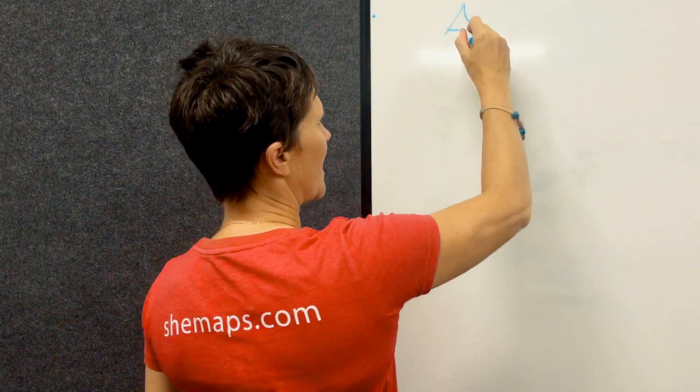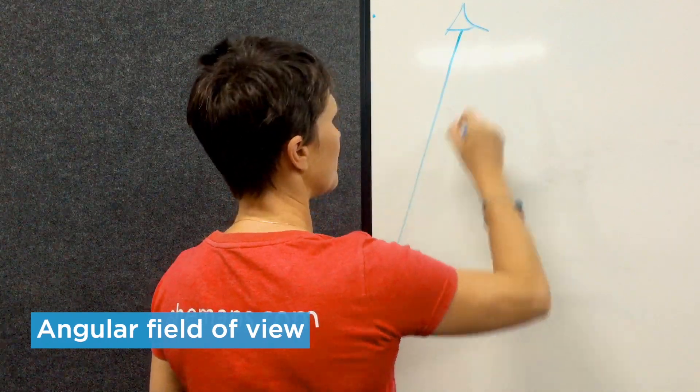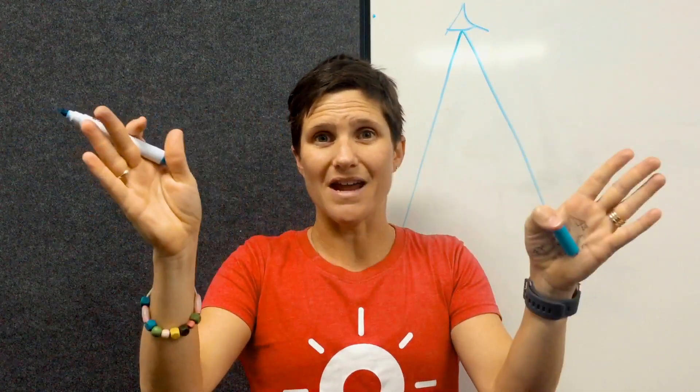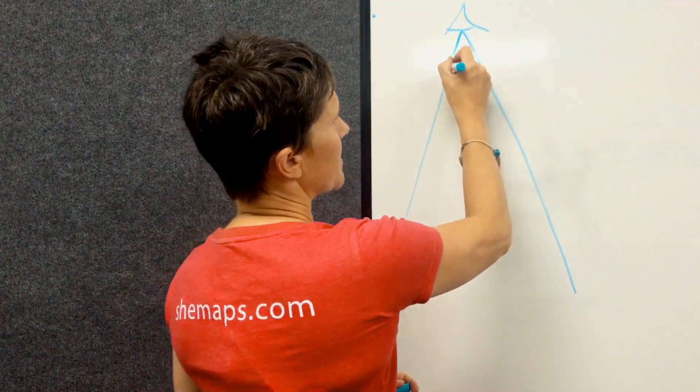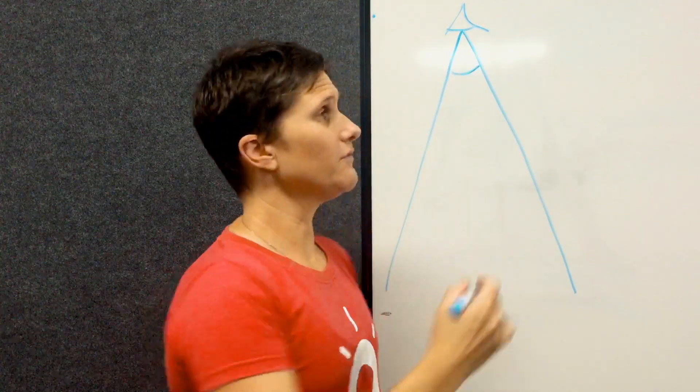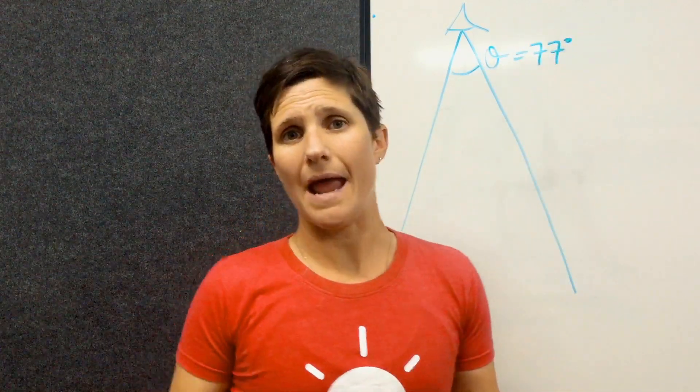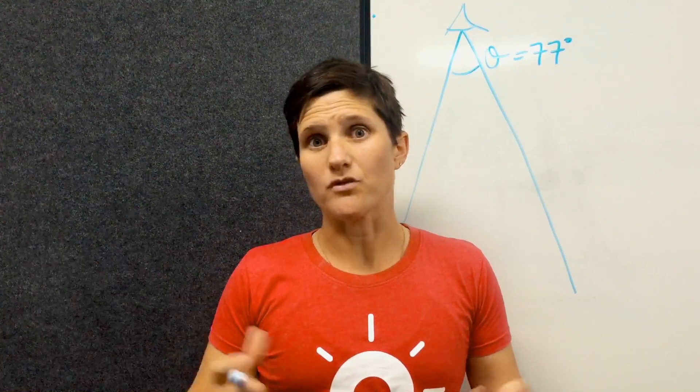Now every sensor has what we call an angular field of view. It's just like our eyes, it looks out at a specific angle and that is set within the camera specifications when you buy your drone or you buy your camera system. So I'm going to say that this particular field of view, the angle theta, equals 77 degrees. So that's the angle of a Mavic 2 Pro camera on that drone.